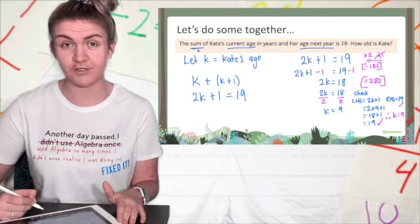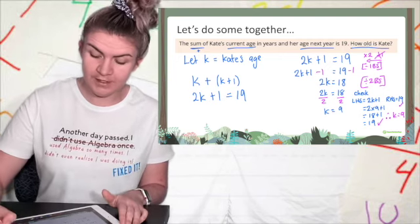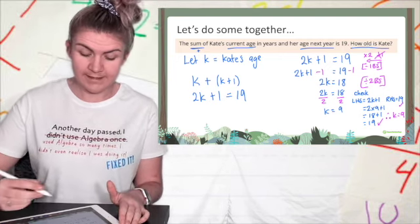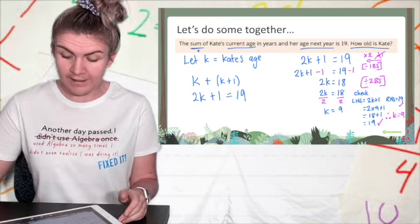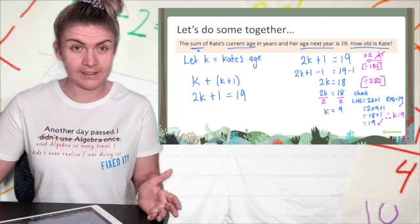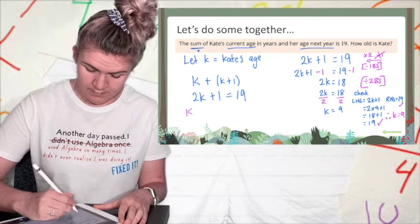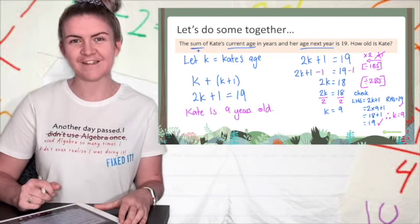I now need to make sure, first of all, I'm answering the original question, which the question is, how old is Kate? And I said k is Kate's age. So I figured out k, so I've answered the question. I now need to think of my units, which is years, and I need to write in a sentence. Kate is 9 years old.